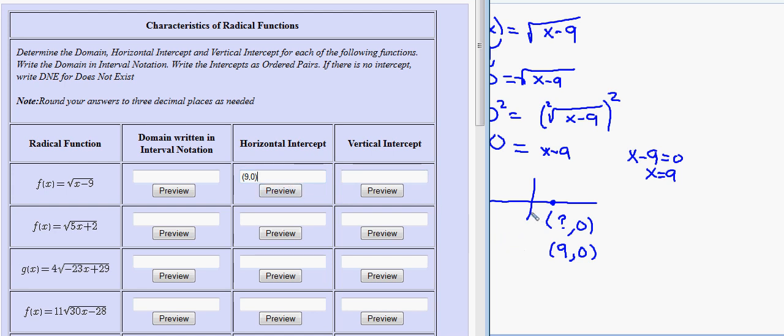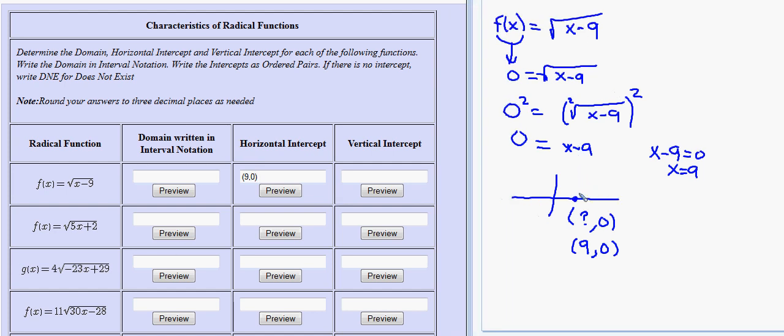To keep the video short, in these problems the radicand, and by the way the radicand is the expression under the radical, is always linear. If that's the case, the graph is always going to do one of two things. Either start at that horizontal intercept and go to the right forever, which has implications for the domain, or go to the left forever, which has implications on the domain.